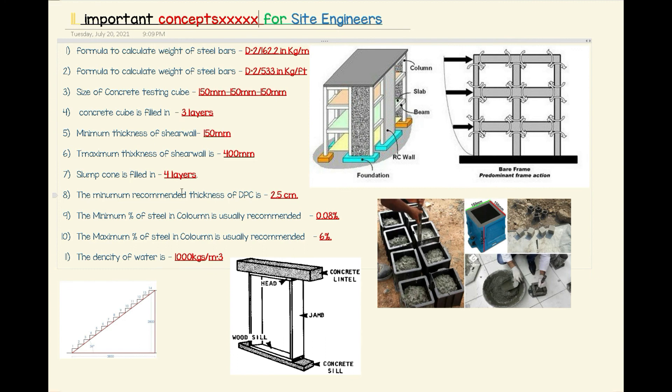At number eleven, the density of water is 1,000 kilograms per cubic meter. For example, if you want to find the quantity of water in every batch of prepared concrete, you would use this density value of 1,000 kg/m³.